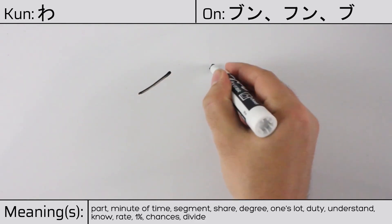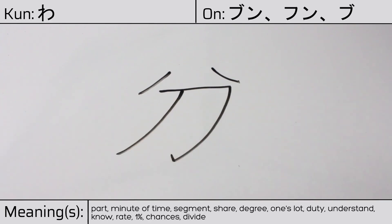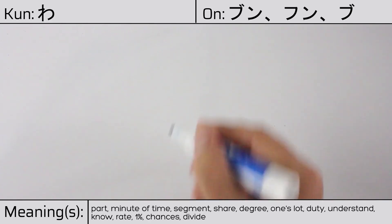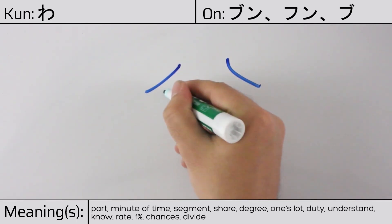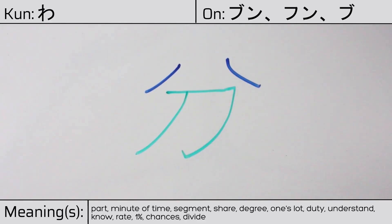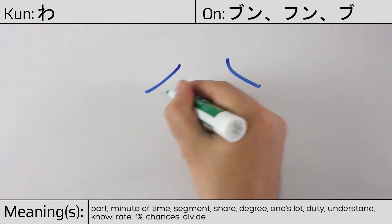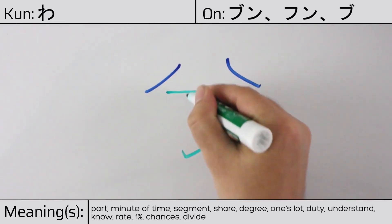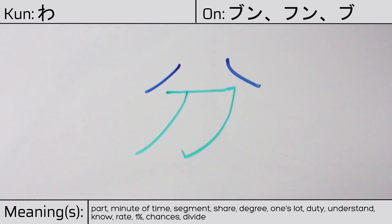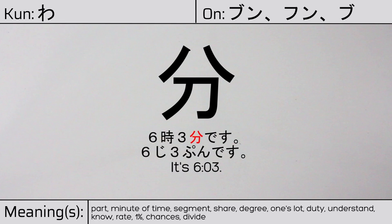Here is the stroke order. This character is made up of the following radicals or parts: two dots at the top, followed by the knife or sword radical. You can remember this kanji by the following hint: something cuts into several smaller parts with a knife. Our example sentence is: Rokuji san pun desu — It's 6:03.